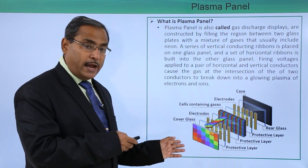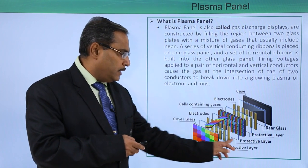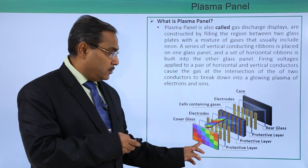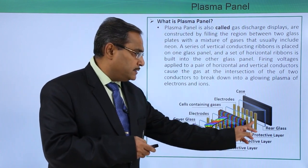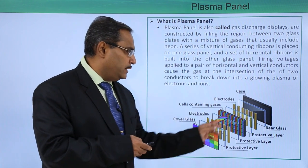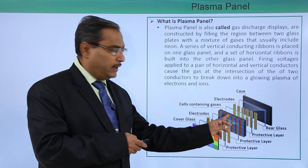Let us see this respective diagram. Here we are having one rear glass, this is a protective layer, another protective layer, and here we are having this cover glass. Now what we are having is a set of electrodes here and another set of electrodes. In between this we are having the cells containing gaseous neon.